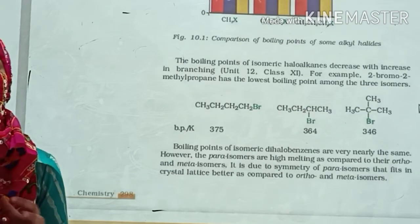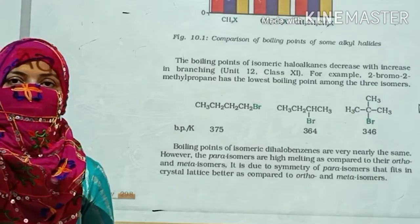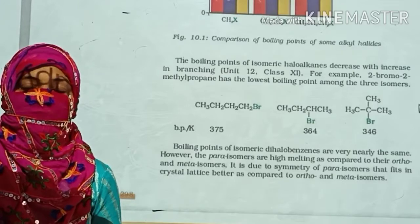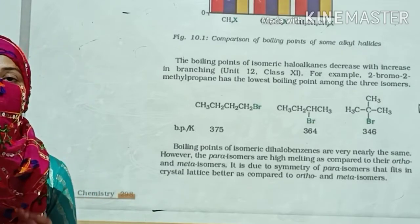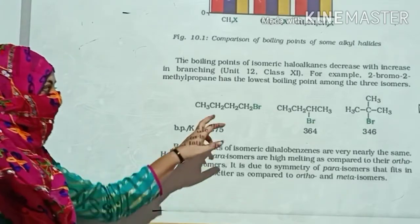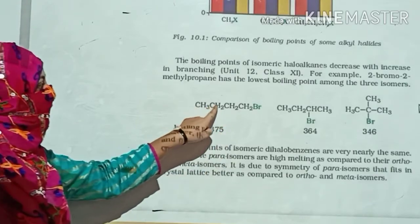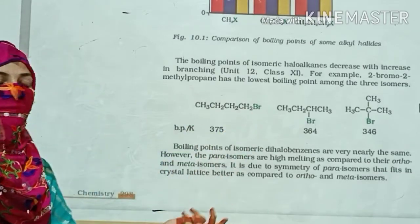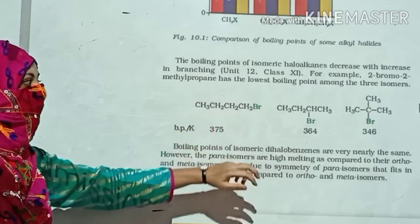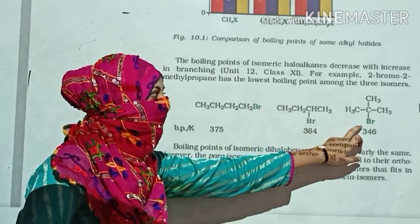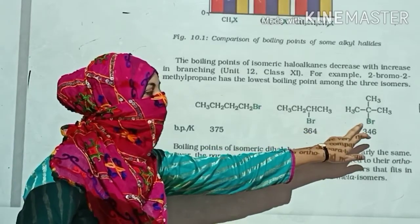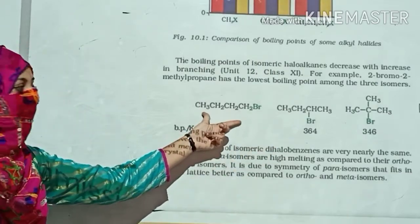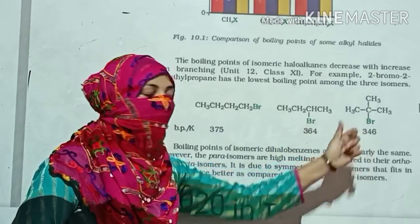One more important thing: if you have one particular molecular formula with different structures, we call them isomers — same molecular formula, different structural formulas. One example given is bromobutane: you can have 1-bromobutane, 2-bromobutane, and another form of 2-bromobutane. One is the straight chain compound, one has one branch, and one has two branches.